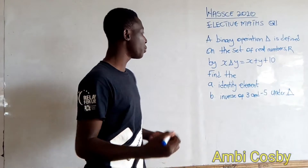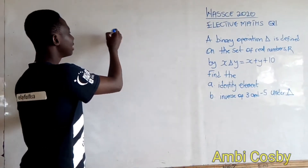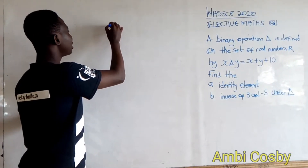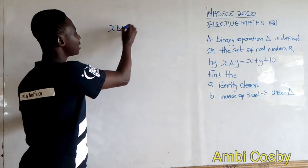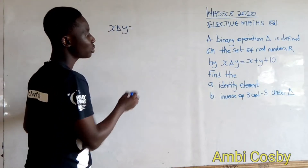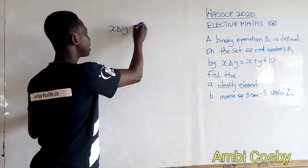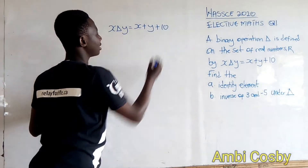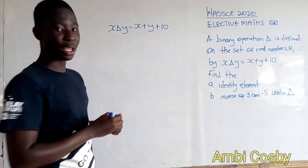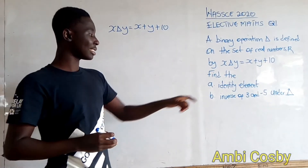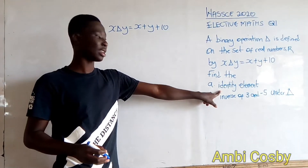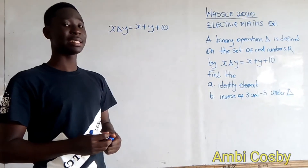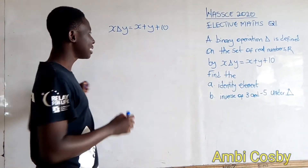We are given the equation x ∗ y = x + y + 10, and we are asked to find the identity element. Let e be the identity element.